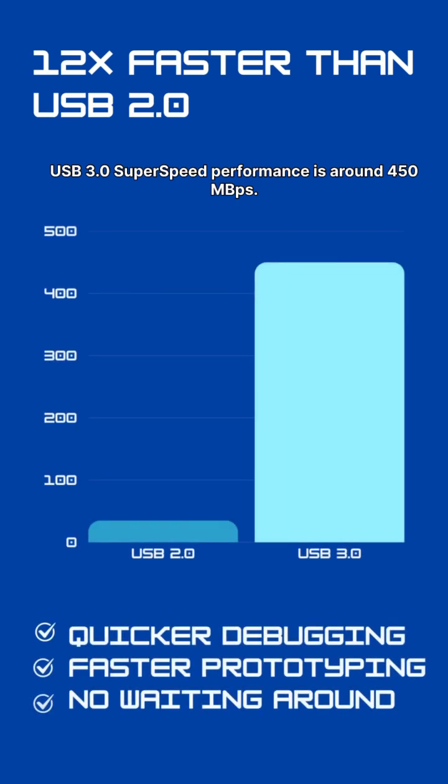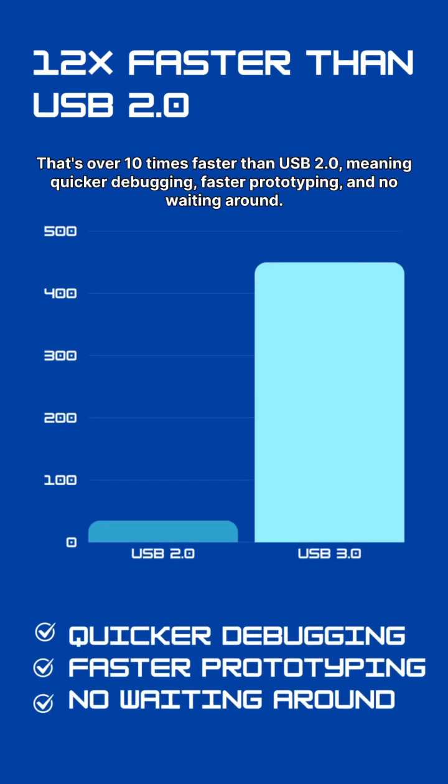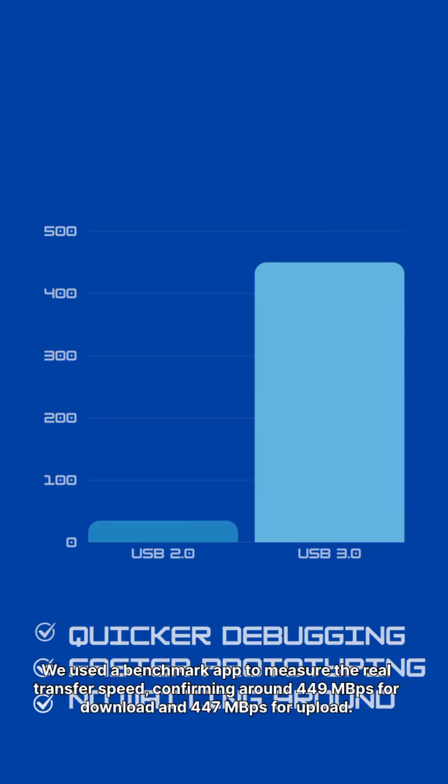USB 3.0's super speed performance is around 450 megabytes per second. That's over 10 times faster than USB 2.0, meaning quicker debugging, faster prototyping, and no waiting around.